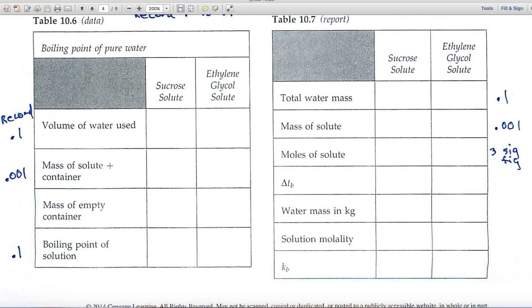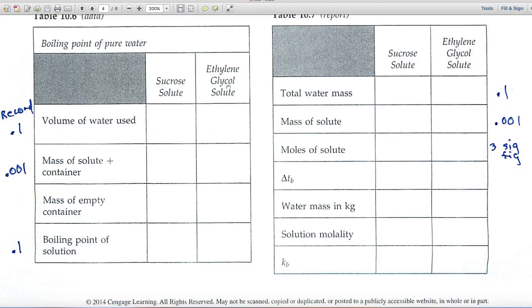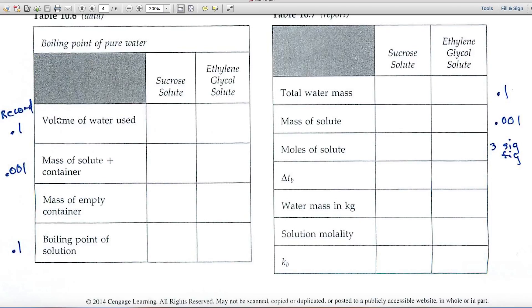And we're looking at two different solids, sucrose, sugar, and ethylene glycol. The volume of water is measured using a graduated cylinder. So you'll want to record to the tenth. The mass, when you look at those photographs, you'll see that you can interpret the photos to the thousandth. So you want to be sure and do that. And the boiling point again of the solution is expressed to the tenth.